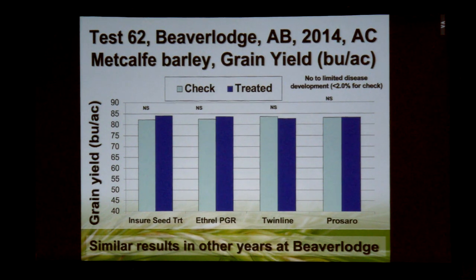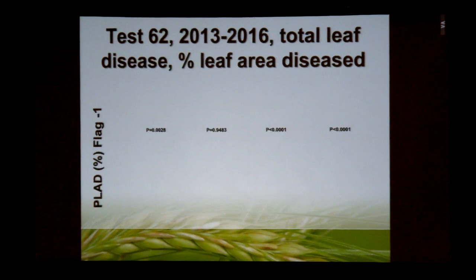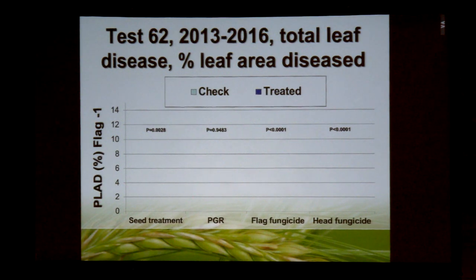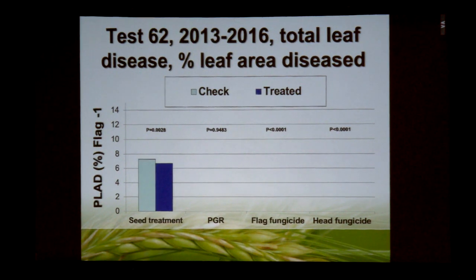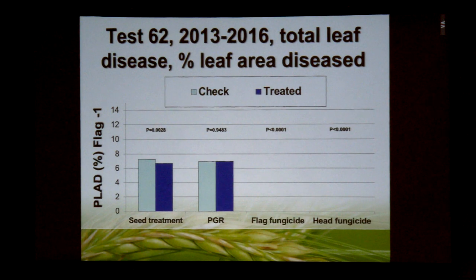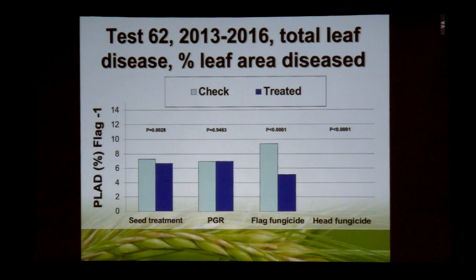The more times you put a fungicide on that crop, the more selection pressure there is in the pathogen population to adapt to that particular fungicide, especially if you're using the same product. Looking at data averaged over the four-year period, we found a small but significant reduction in leaf disease at the end of the growing season by using a seed treatment. We didn't see any impact of the PGR on disease, which was good to see, but we did see significant reduction in disease with both the flag leaf fungicide application — Twinline — and the head emergence fungicide application.